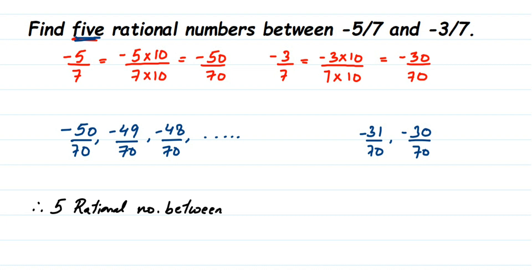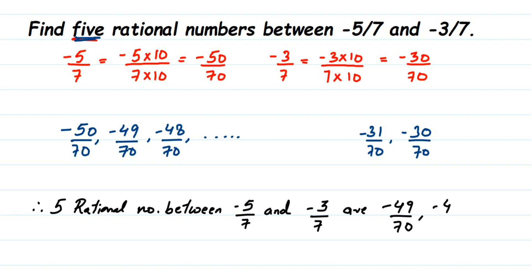Here I multiplied by 10 — if you multiply by 20 or 100, you will get different answers, but they will still be correct. It just depends on which number you choose to multiply with. So I'll take five rational numbers: -49/70, -48/70, -40/70, -35/70, and -32/70.